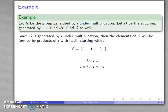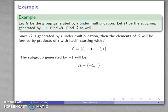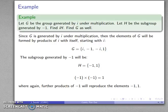I multiplied by itself 4 times is equal to 1, and there's our multiplicative identity. So our group G consists of these four elements: i, -1, -i, 1. Further powers of i just reproduce this sequence — you should prove this. And our subgroup generated by -1 is going to be {-1, 1}. Further products of -1 will just reproduce those elements.